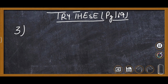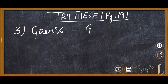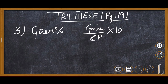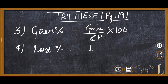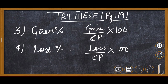If you are required to find the gain percent — gain and profit are the same — the formula is: Gain percent = Gain upon CP multiplied by 100. If you are required to find loss percent, then: Loss percent = Loss upon CP multiplied by 100.